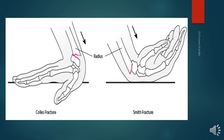The second figure is of Smith's fracture. It occurs when a person falls on a bent or flexed back of the wrist, displacing the distal end of the radius toward the palm. It may lead to carpal tunnel syndrome and compression of the median nerve as a complication.